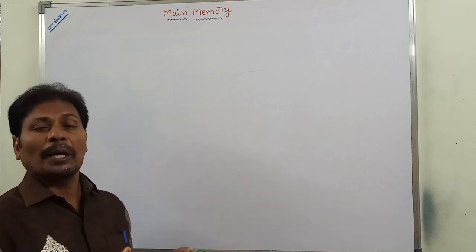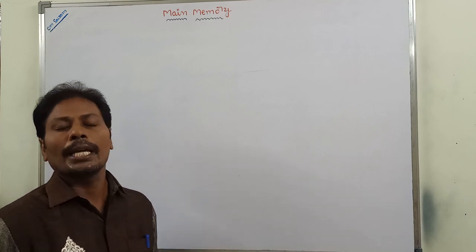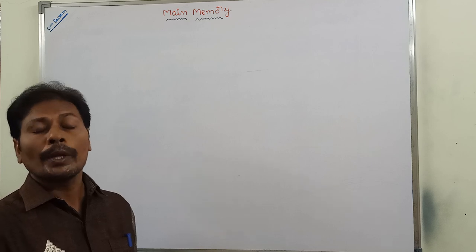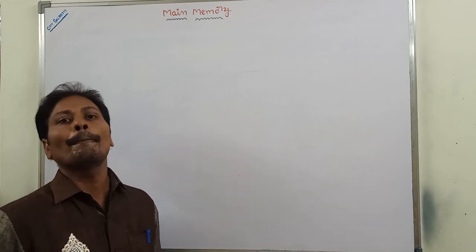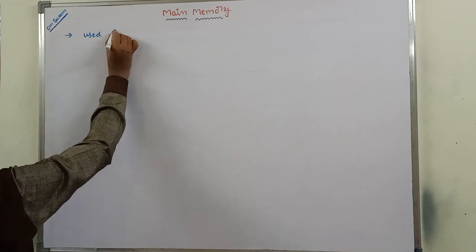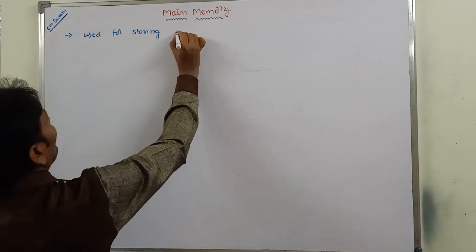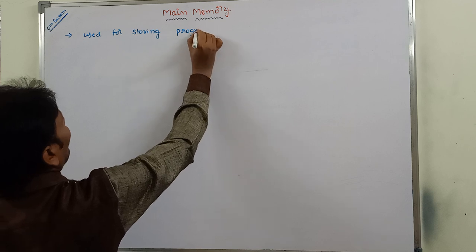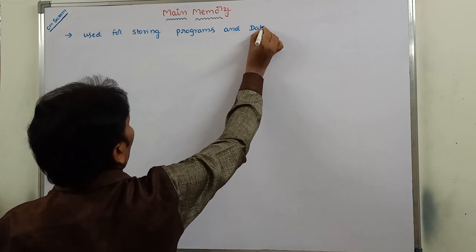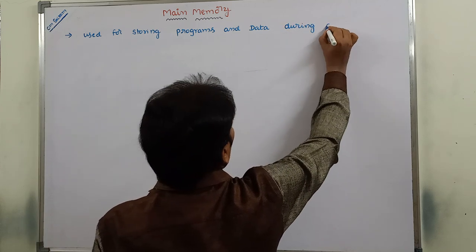First of all, what is the purpose of main memory? Main memory is the central storage unit in the computer system. Main memory is used for storing programs and data during the computer operation.